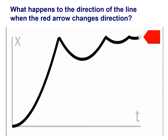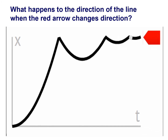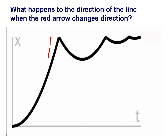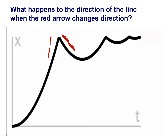What happens to the direction of the line on the graph when the object changes direction? When the arrow moves up the line goes up; when the arrow moves down the line goes down. It's important to be clear that the line going down does not represent a decrease in speed — the object is still in motion in both directions. Also notice that distance on this graph is labelled x.